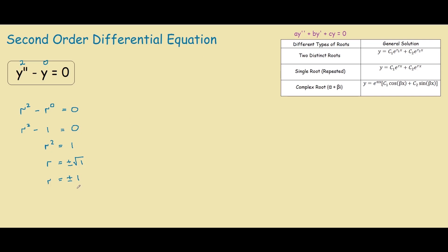So from over here, you can see that we have two distinct roots, 1 and negative 1, which gives us this scenario over here.